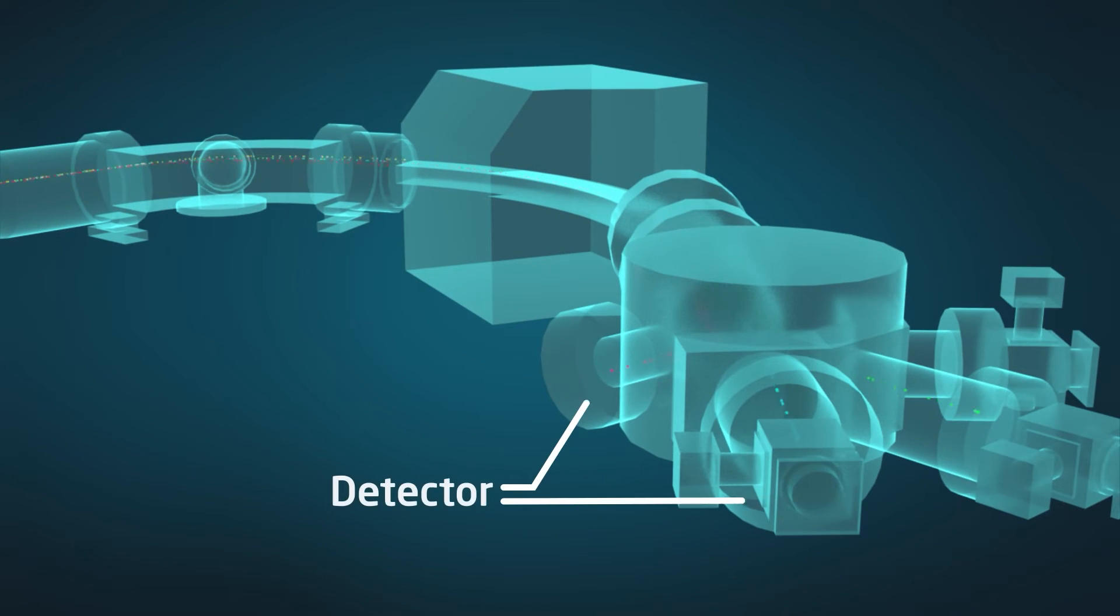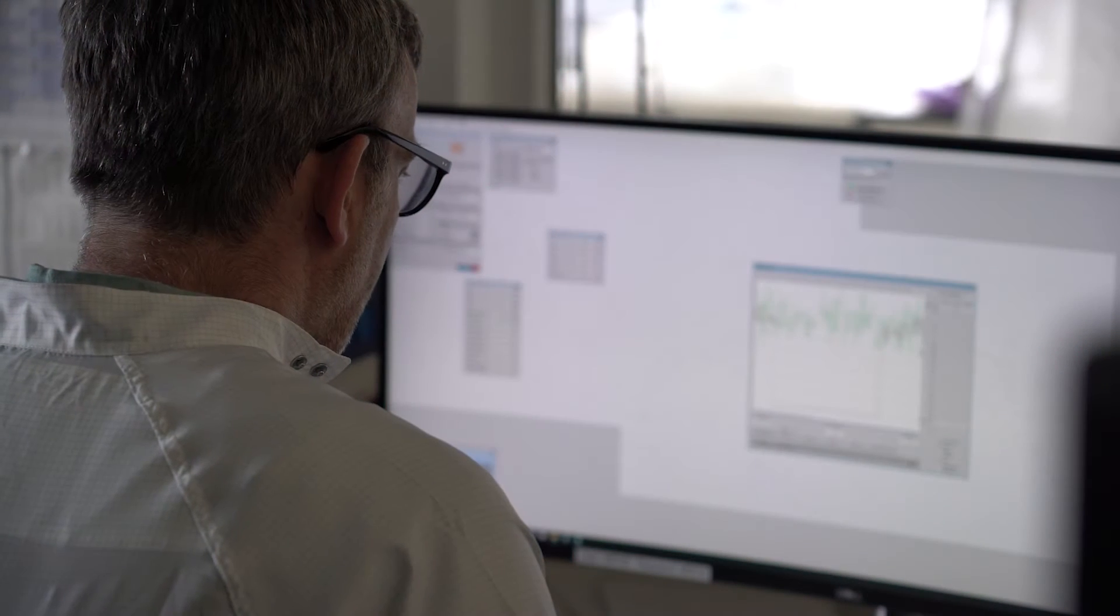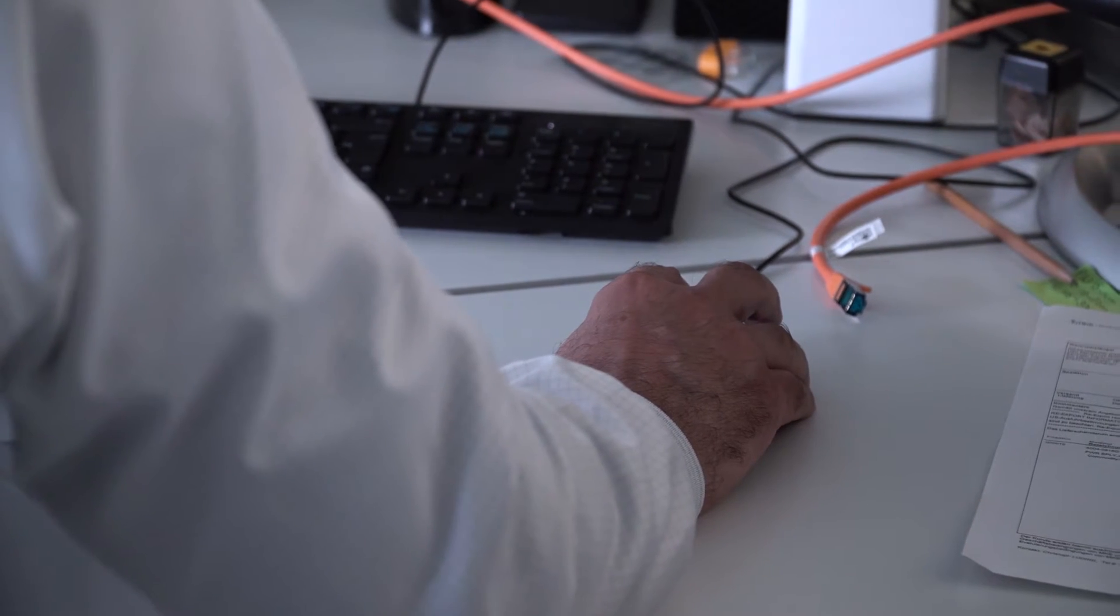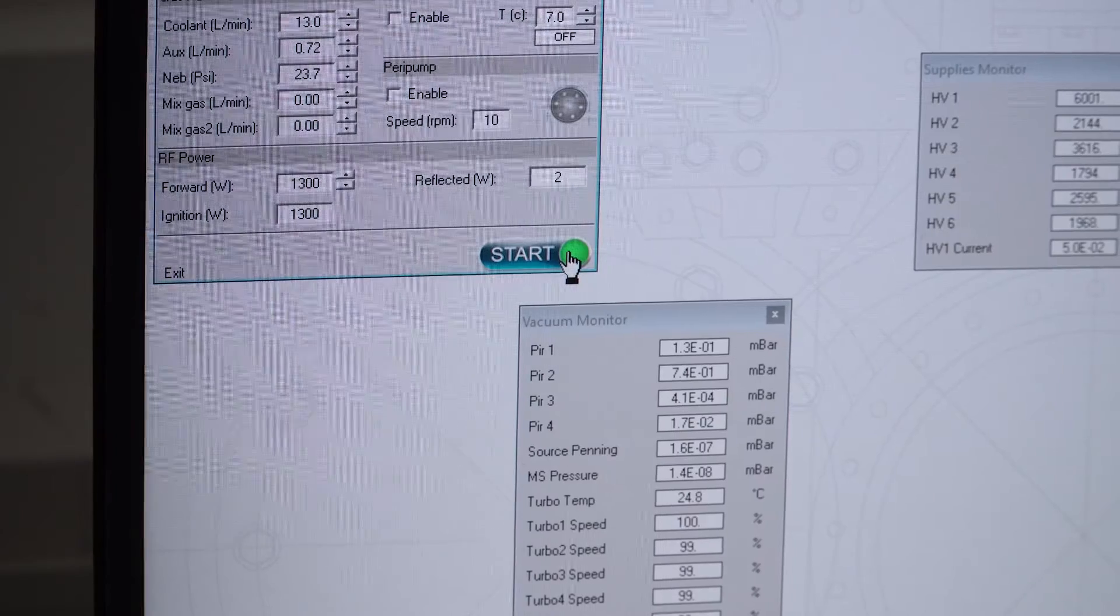The accelerated ions then hit a detector, which measures precisely the amount of atoms in a sample. This response of the system is then compared to the response for a set of standards of different known compositions.